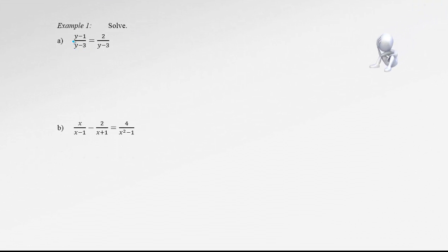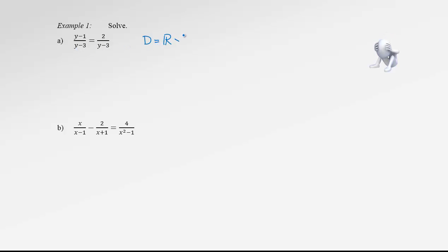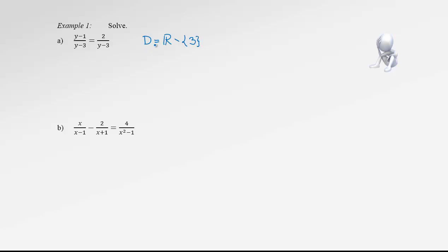Let's say we want to solve equation A. The first step is to find the domain. The domain is all real numbers except for the number that will make the denominator 0 — either denominator, and they are actually the same. When is y minus 3 equal to 0? When y equals 3. Therefore, 3 is excluded from the domain. So the domain is all real numbers except for 3, and now we can start solving.